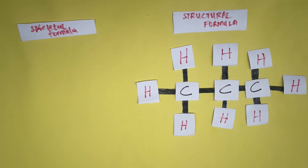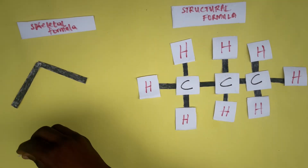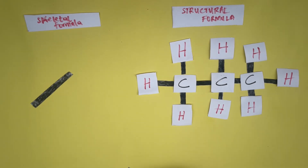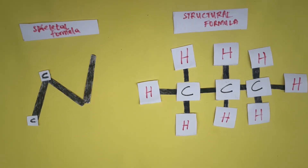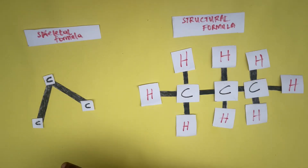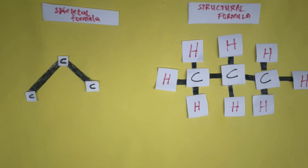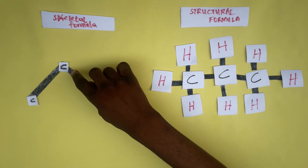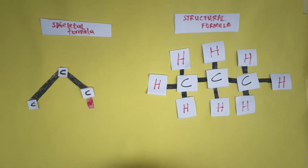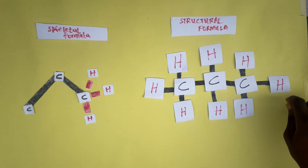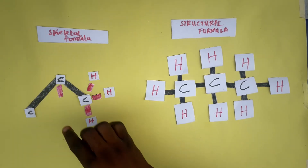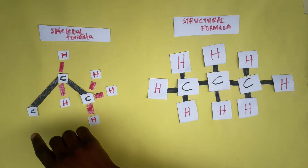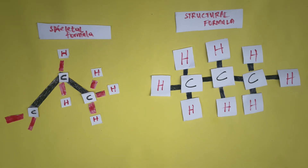The next representation is the skeletal formula. To draw the skeletal formula for propane, we need three corners, and to make three corners we need two lines. Carbon atoms are placed at the corners: one, two, three. Note that if we used three lines we would form four corners, which would represent a four-carbon compound — that would be wrong for propane. With two lines and three corners, this carbon at the end has one single bond attached, so it needs three more hydrogens. The middle carbon has two single bonds, so it needs two more hydrogens. The last carbon needs three more hydrogens.